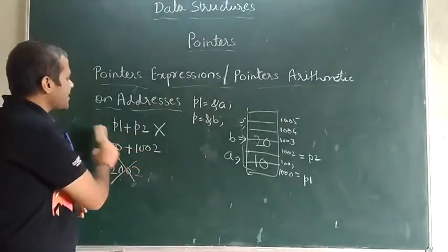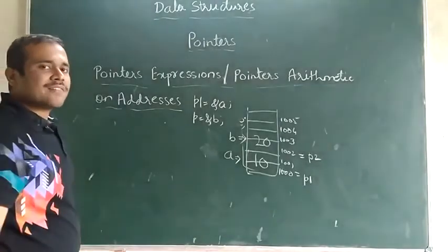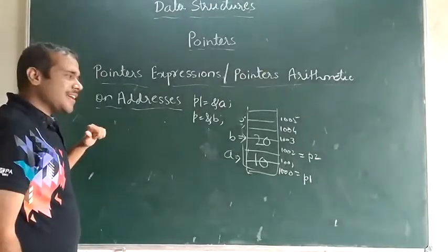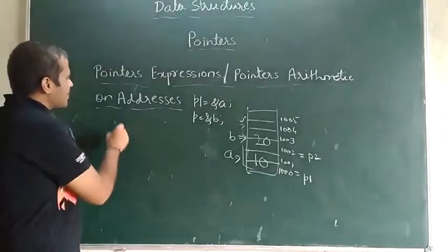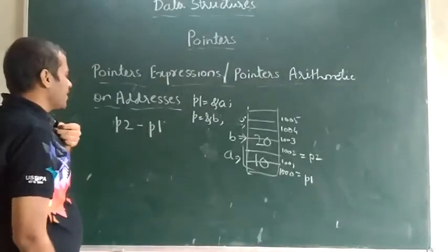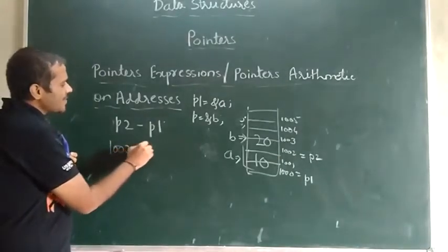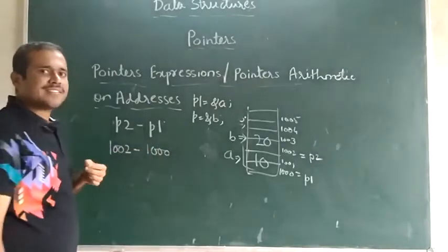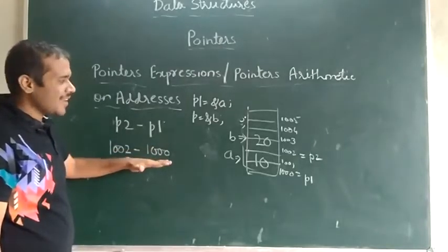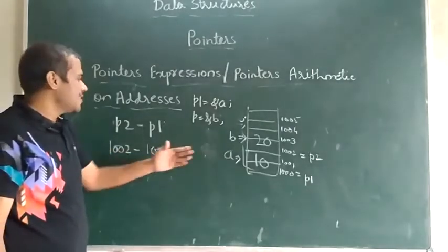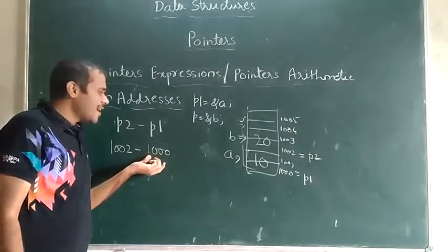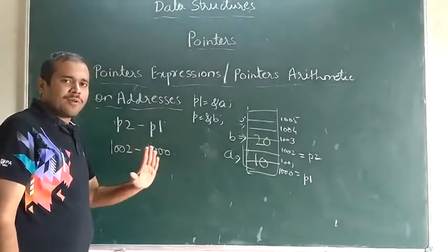Now let us look at subtraction. If we do p2 minus p1 — for example, 1002 minus 1000 — after subtraction the result is a valid address. Subtraction is available and you will get an output with no problem.